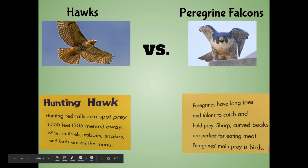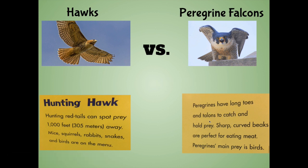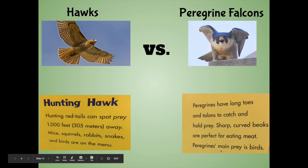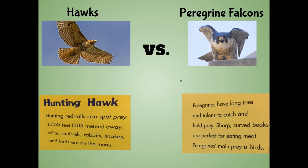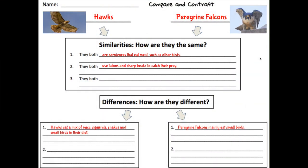How about for peregrine falcons? Peregrine falcons have long toes and talons to catch and hold prey. Sharp, curved beaks are perfect for eating meat. Peregrine's main prey is birds. You might want to pause this video and think: what is the same about hawks and peregrine falcons, and what's different? As a researcher, it's always a good idea to take notes, so let's organize our thinking using this worksheet. Over here we have hawks, over here we have peregrine falcons, and here we filled in a few of the ways that they were similar. Number one, they both are carnivores that eat meat, such as other birds. Number two, they both use talons and sharp beaks to catch their prey. These are ways that both birds are the same.